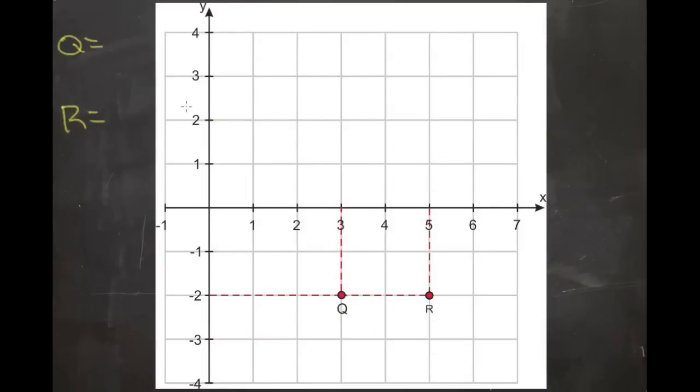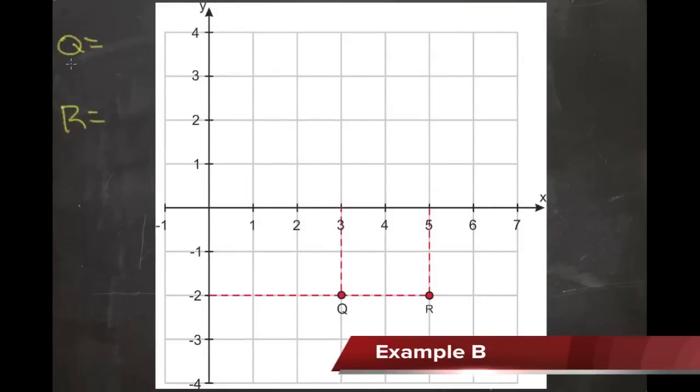Here we're going to identify two points, Q and R, and put them in coordinate notation. We have our origin (0, 0), and to find the location of point Q,